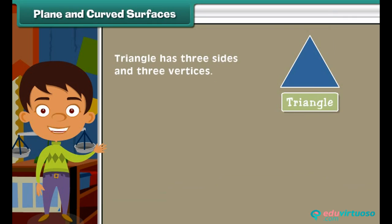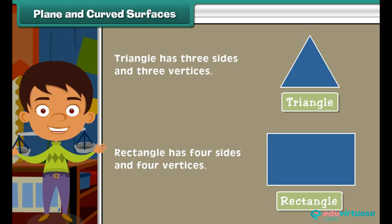Similarly, a triangle has three sides and three vertices. A rectangle has four sides and four vertices.